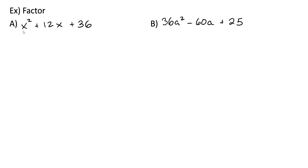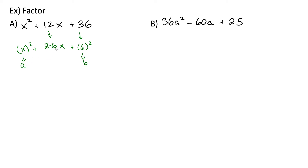Let's look at an example. x is being squared; 36 is a perfect square; and now we can rewrite 12 as 2 times 6 times x, where x was the square root of the first term and 6 was the square root of the second term. So in this case x is our a, 6 is our b, and we have 2 times a times b. This factors into x plus 6 squared. You also could have factored this using the AC method.